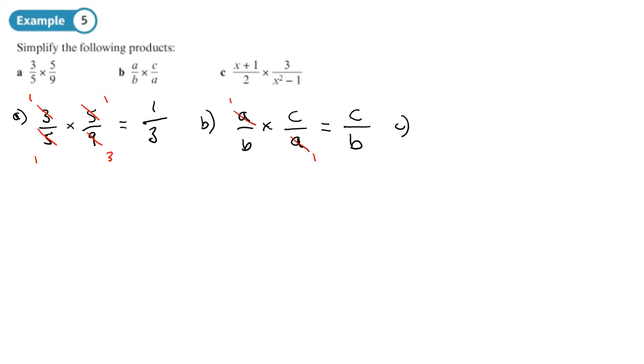C. We want to do the same thing. See if we can cross-cancel. x+1 over 2 times by 3 over... Now, when you've got an algebraic fraction, it helps to actually write things or factorize things into brackets to see if you can cross-cancel. Now, x squared minus 1, difference of two squares.